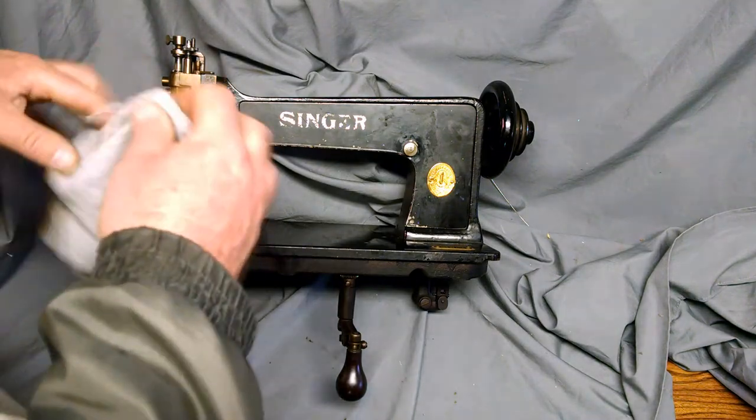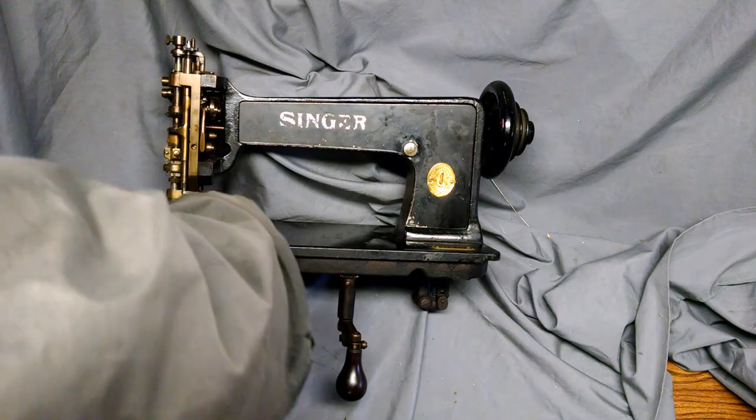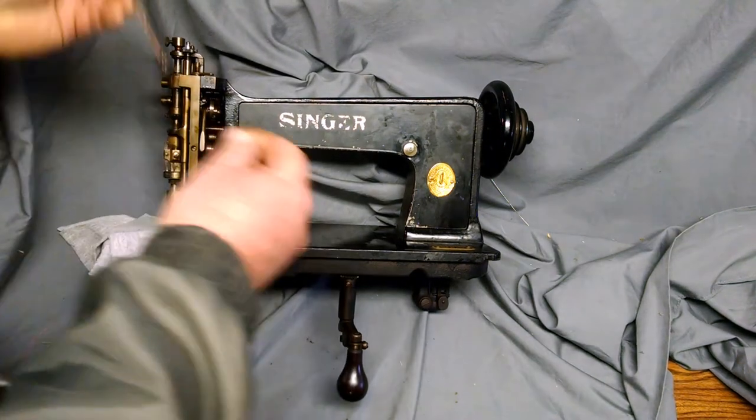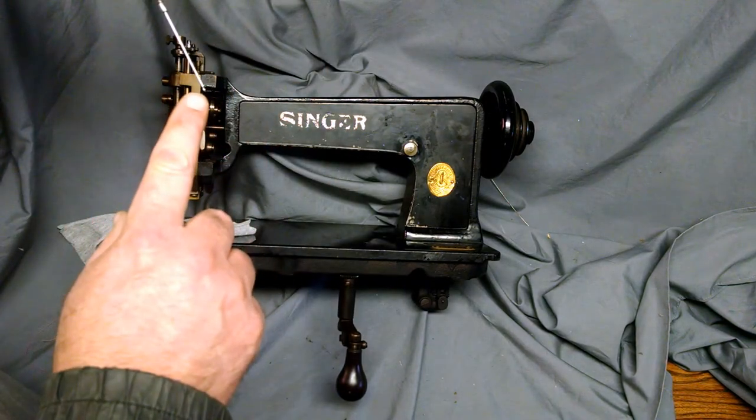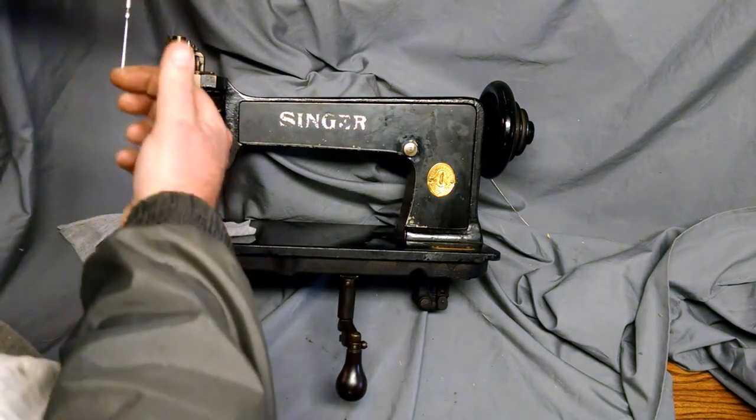Lift up your presser foot and take whatever type fabric you're using. Put that under the presser foot and then like I mentioned on the needle you've got your opening for the loop and that's going to be facing you.